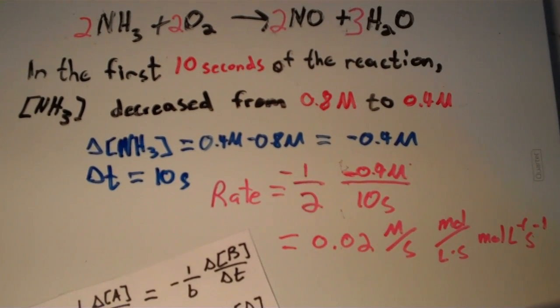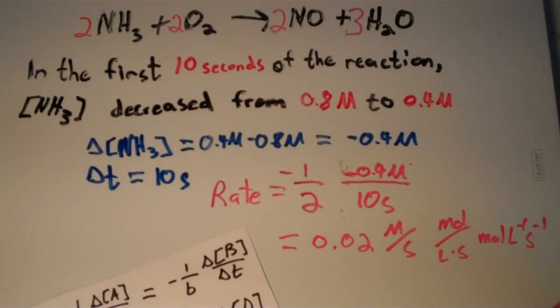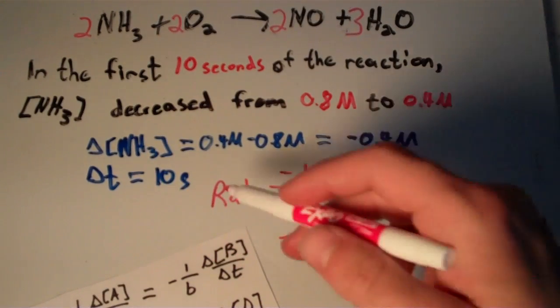So that is how you find the rate of a reaction given the balanced chemical equation and the change in the concentration of one of the reactants or products and the change in time.